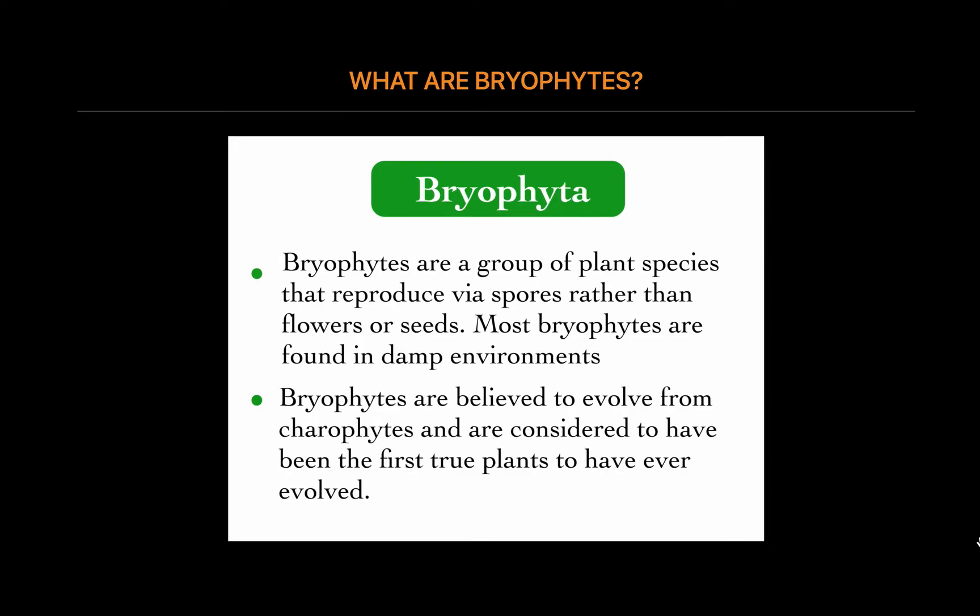As bryophytes are simpler plants, most have no internal means of transporting water or nutrients. They are often said to have leaves, but these are not equivalent to the leaves of vascular plants. These plants do not produce flowers, and therefore never produce seeds. Plants that don't flower are called cryptogams and reproduce by spore production, with other cryptogams being fungi, slime molds, and ferns.